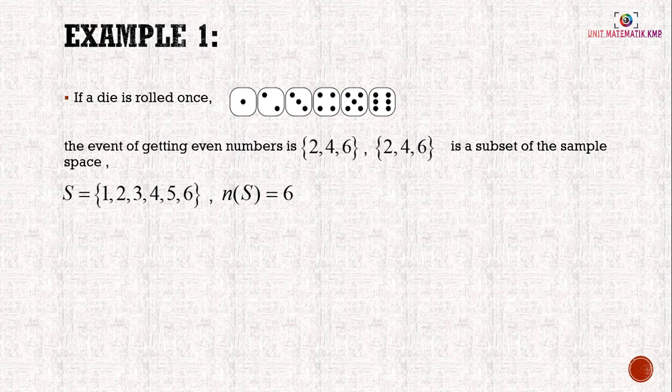Example one: if a die is rolled once, the event of getting even numbers is {2, 4, 6}, and {2, 4, 6} is a subset of the sample space. The sample space of the die has 6 possible outcomes, so the number of elements in the sample space is 6.